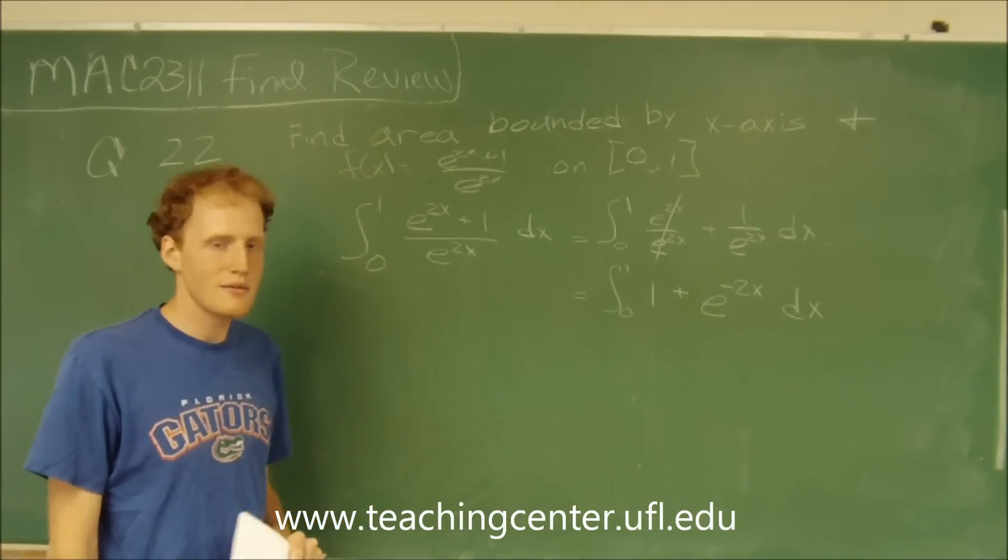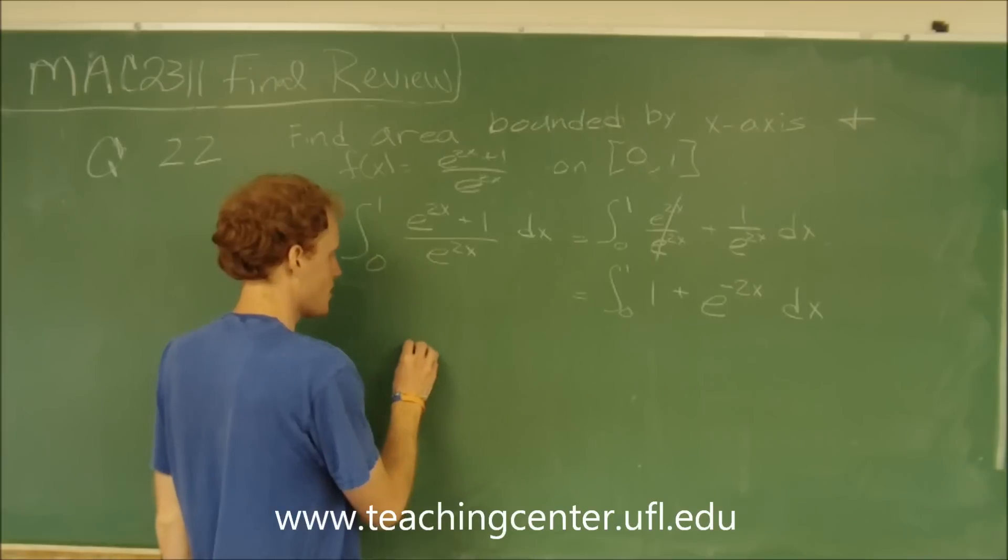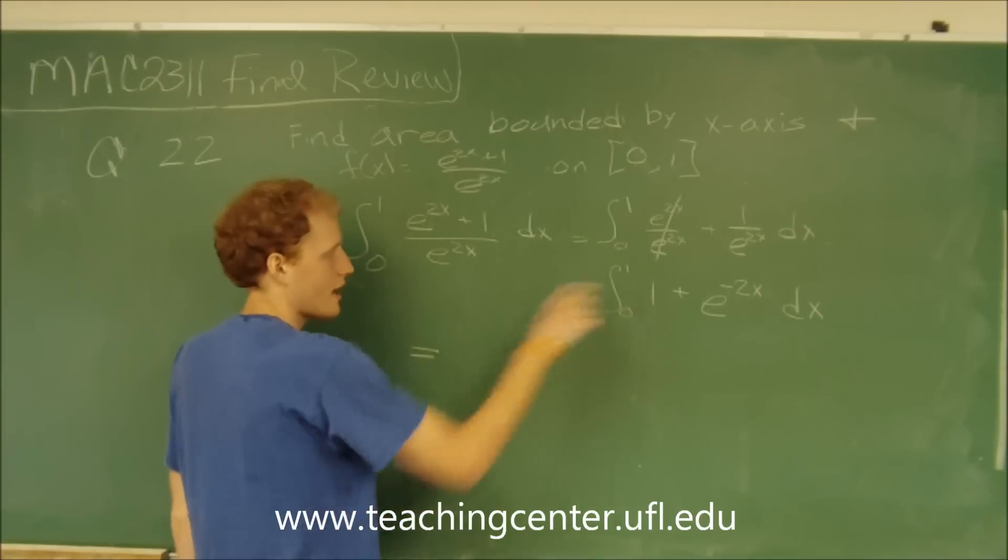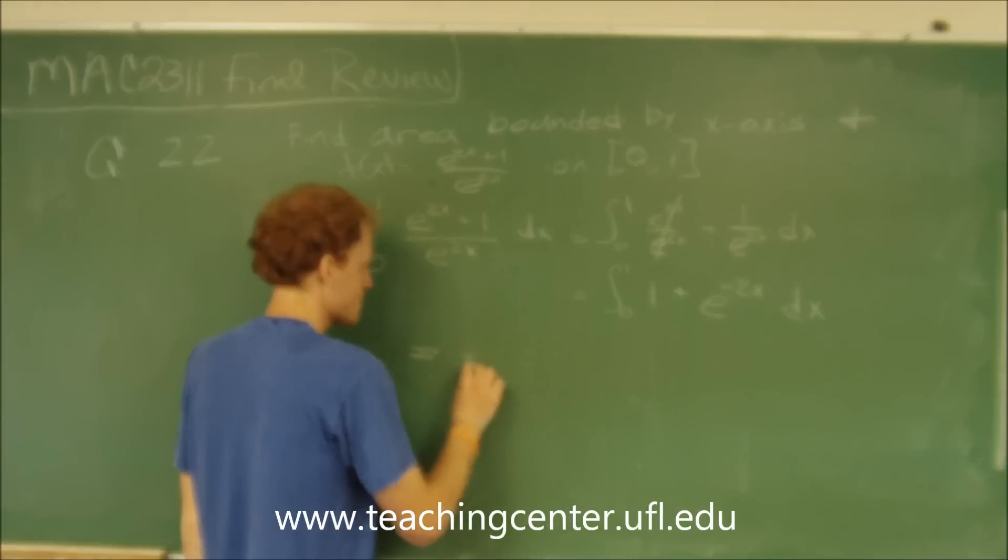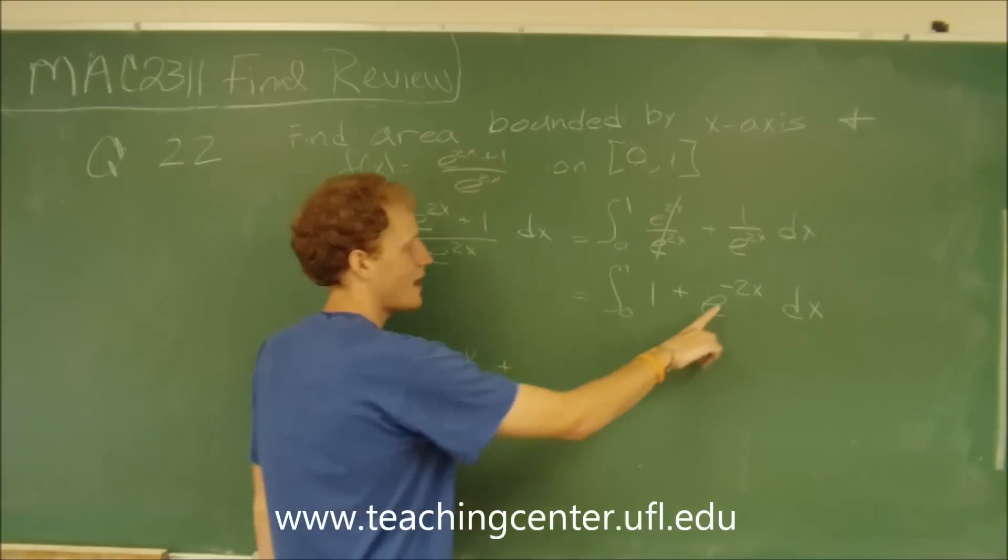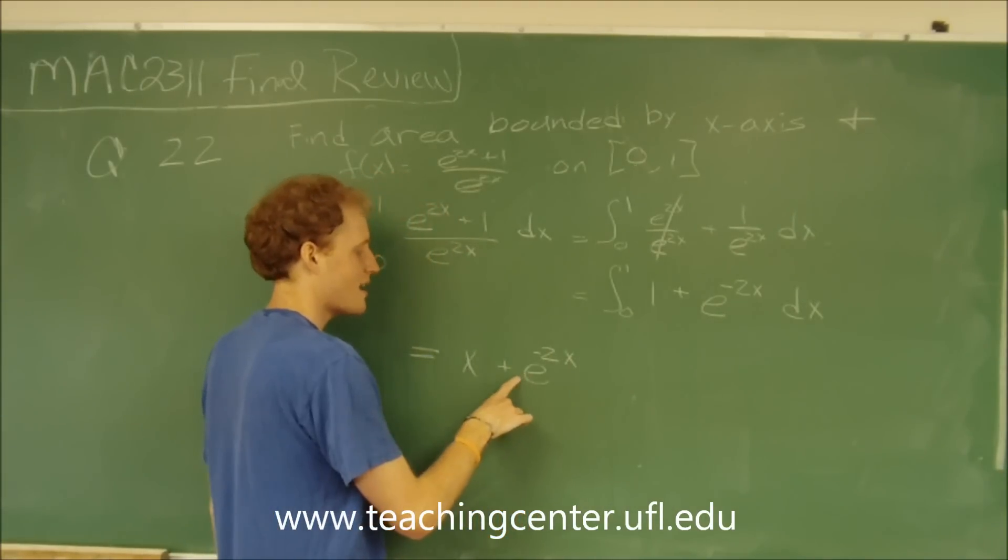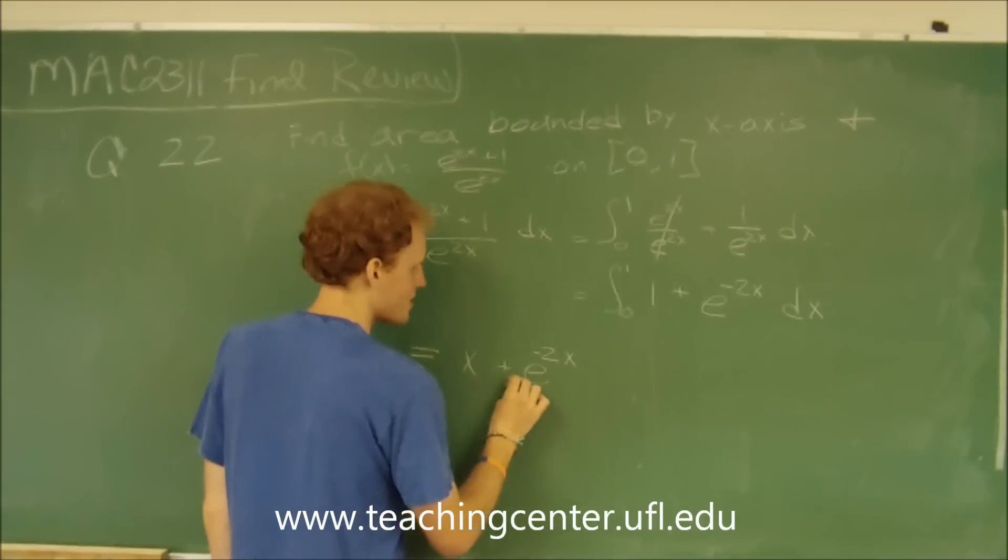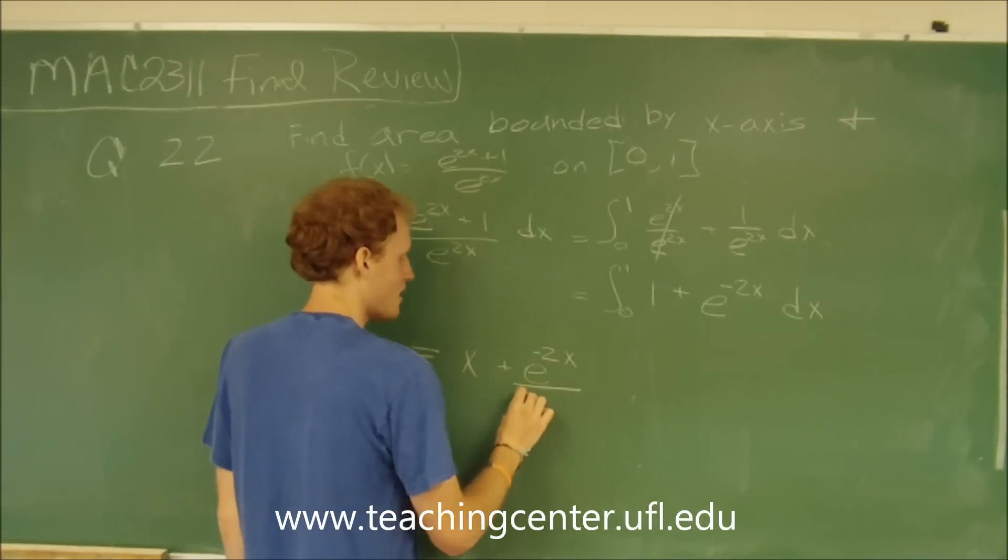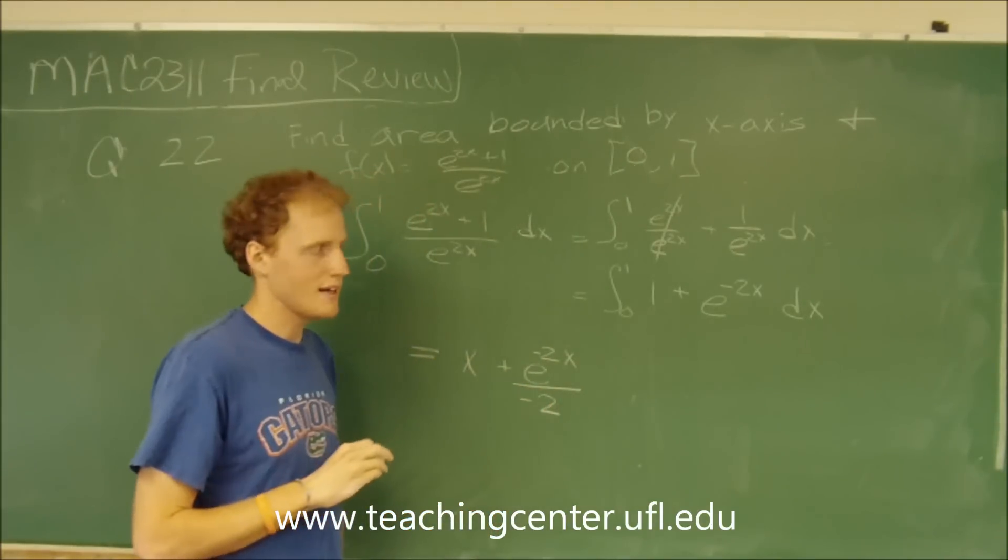Let's take the anti-derivative. We're going to get anti-derivative of 1 is x plus the anti-derivative of e to the negative 2x is e to the negative 2x divided by negative 2.